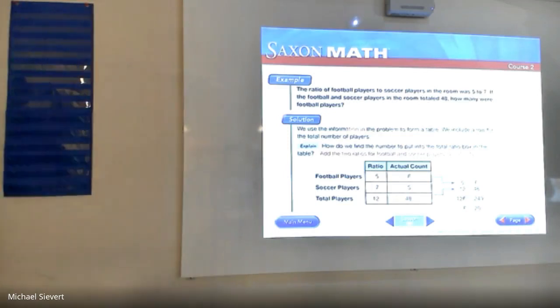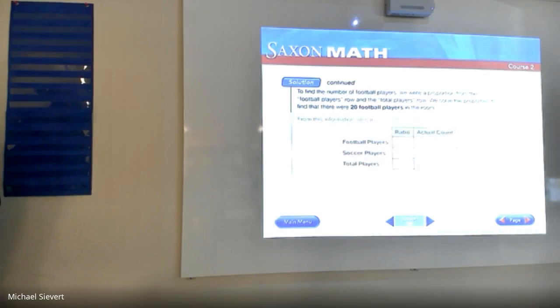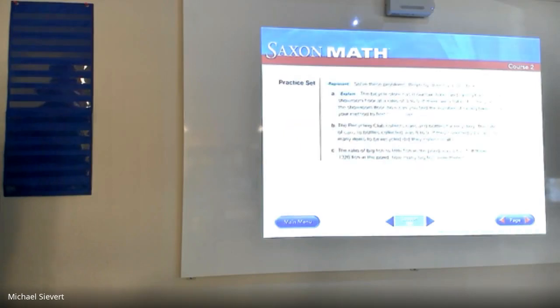I don't understand. This is a little confusing. So what we're doing is we're using the information from the problem to form a table. We include a row for total number of players, so total players that they surveyed. How do we find the number to put into the total ratio box of the table? You add the two ratios of the football and soccer players. You guys got to make sure that you keep the ratio separate from the actual count. When it's a total, something that is the actual count, you don't know the total of the ratio. Let's do one more.